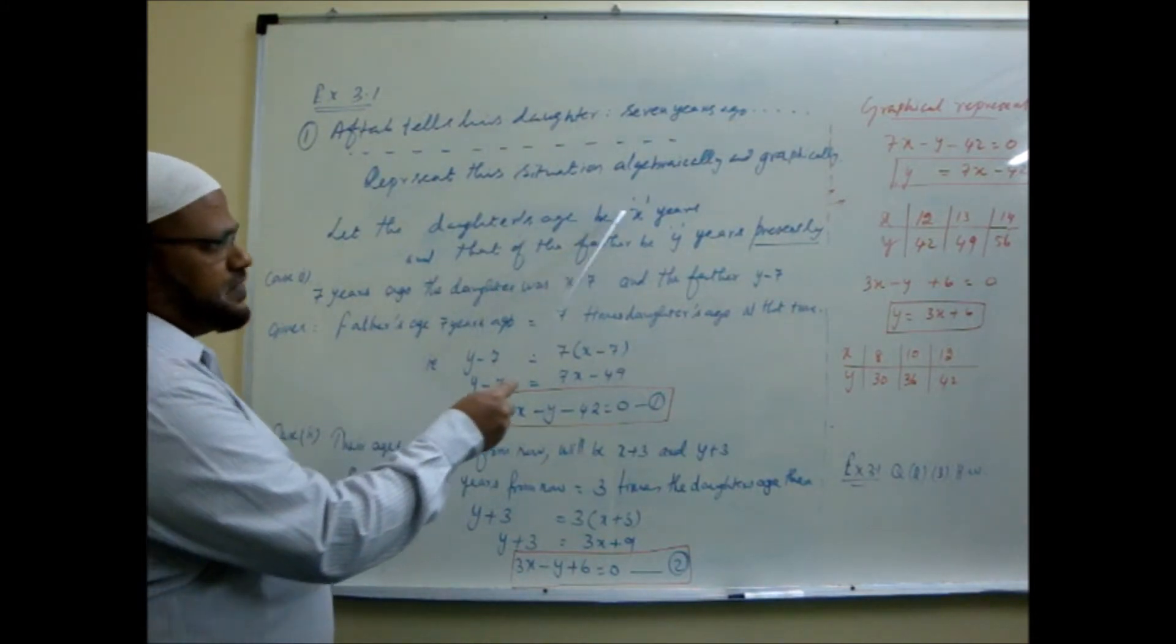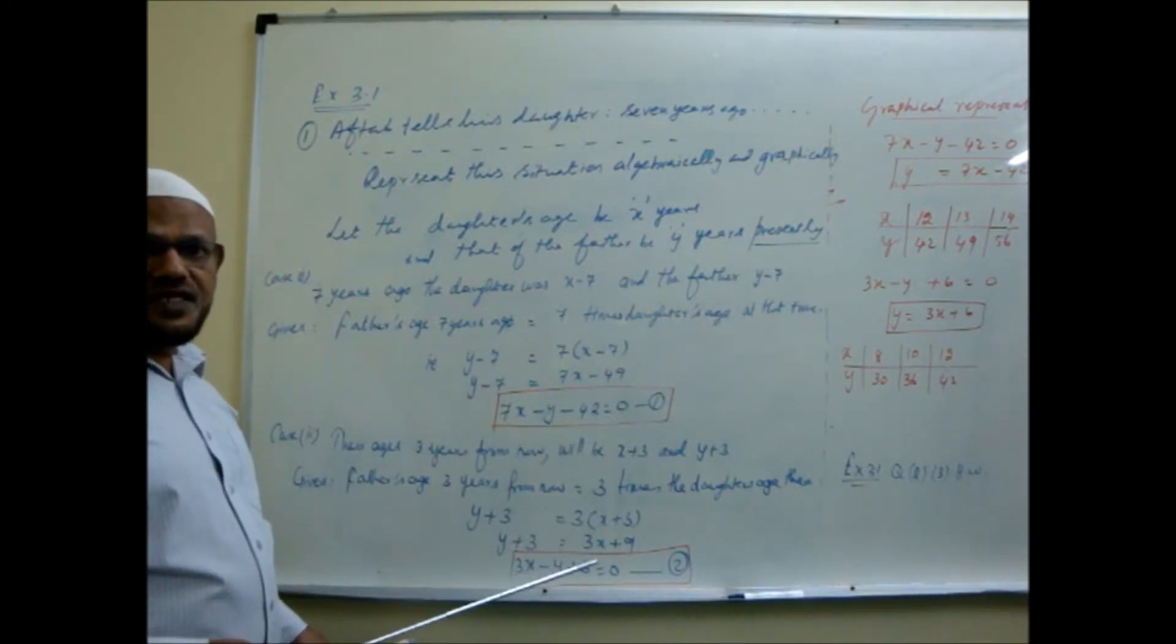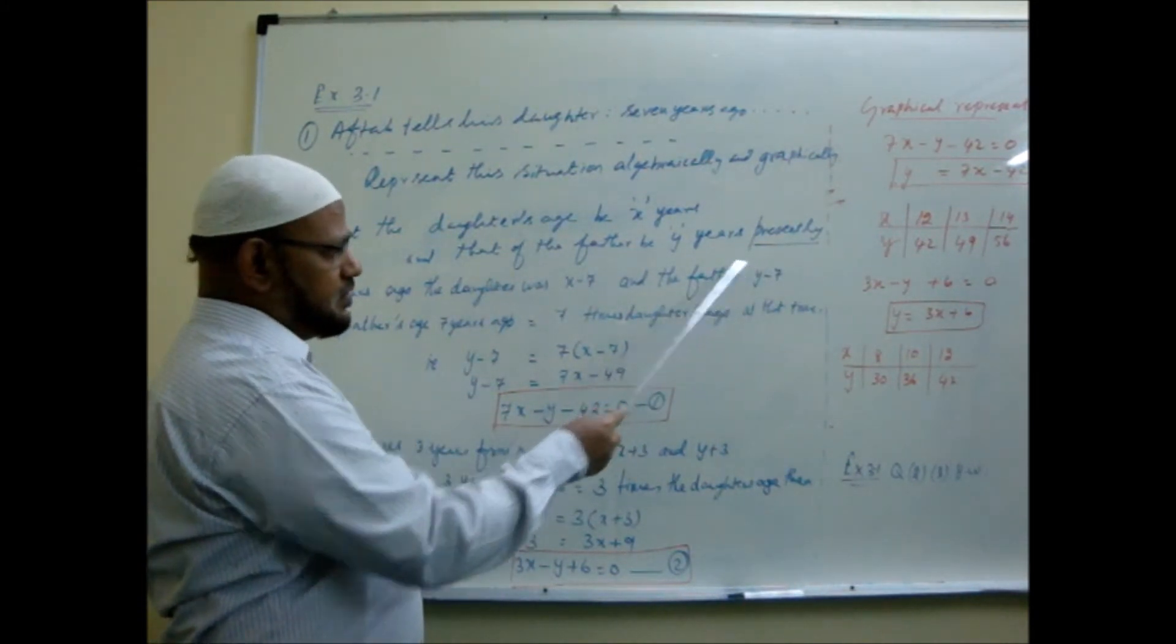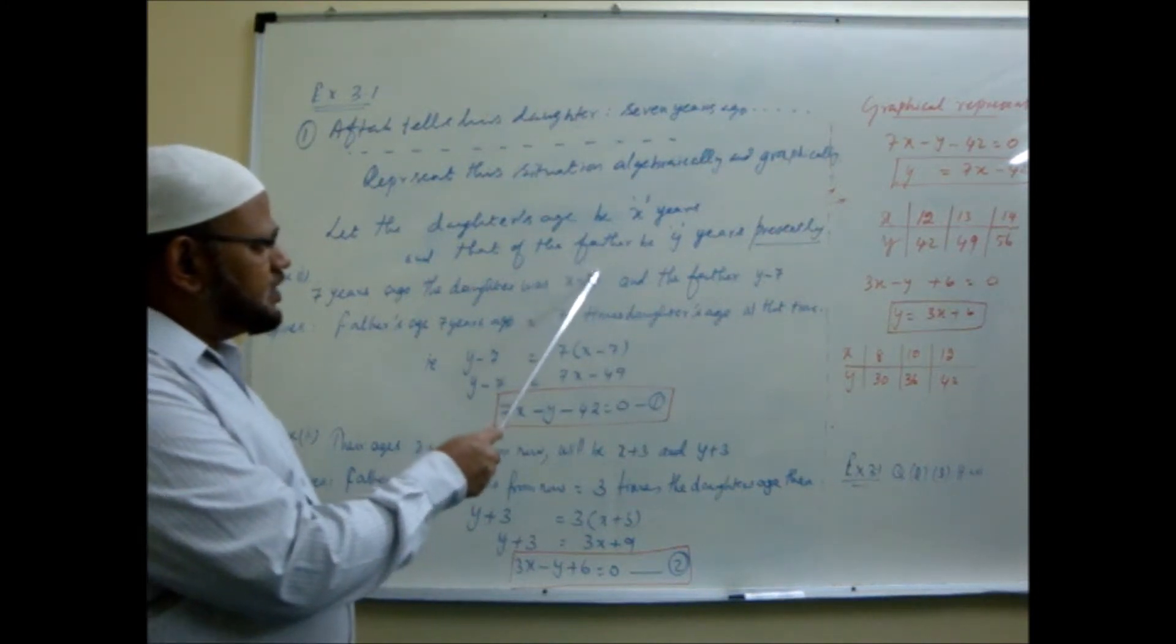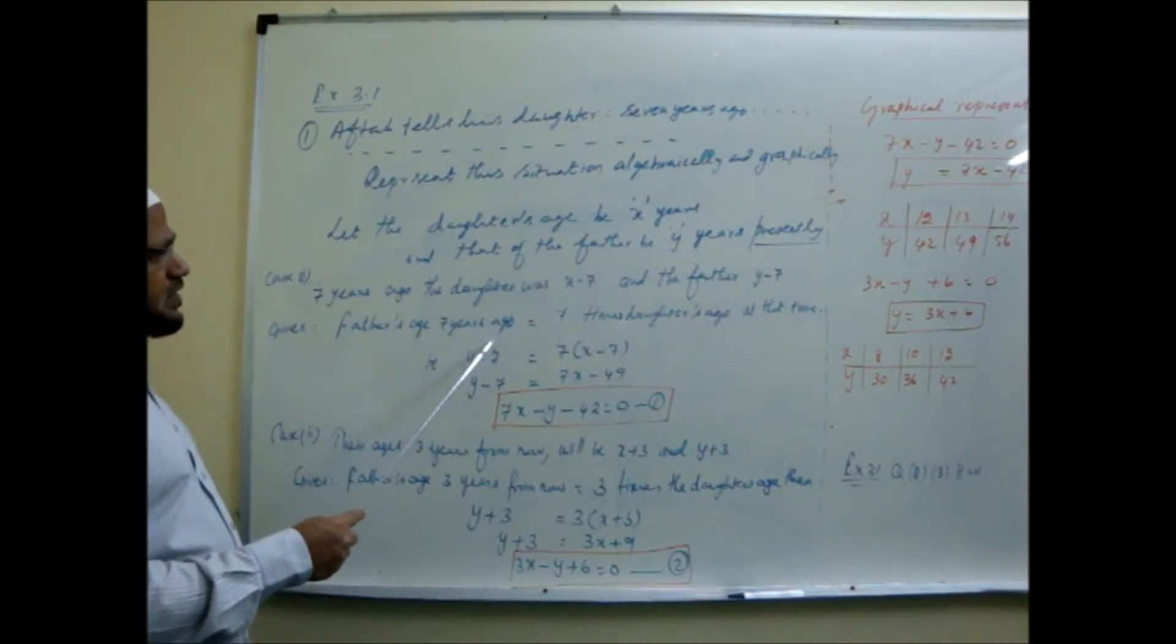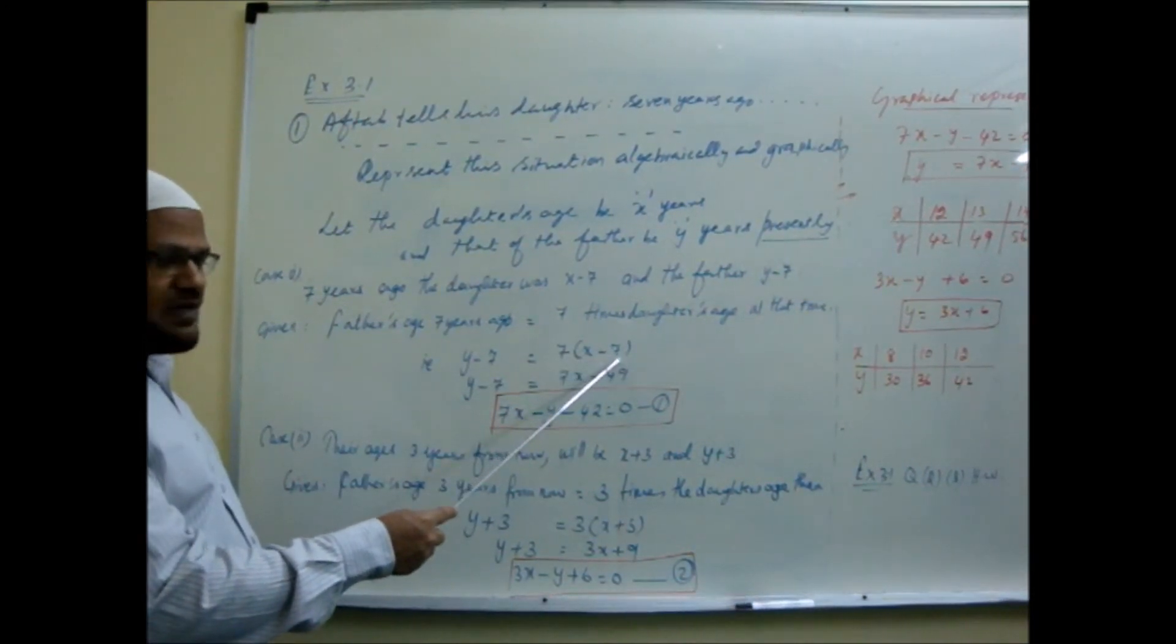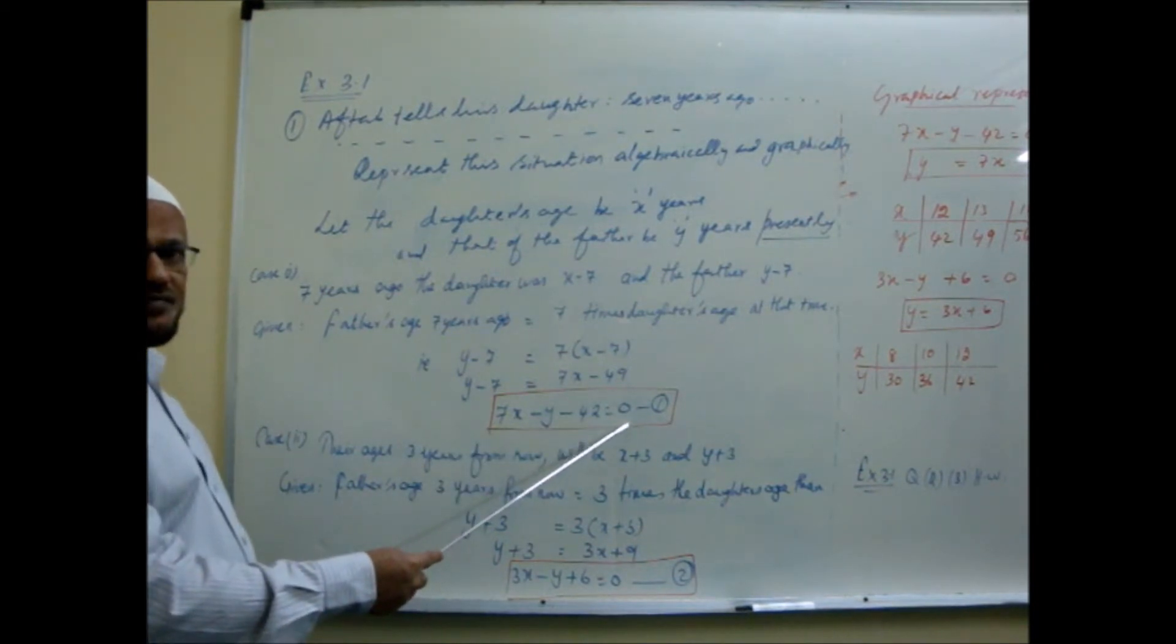You take the daughter's age as x and the father's age as y presently now. Then what will be the first case discussing about age of 7 years ago. So daughter was x minus 7, 7 years less. Father was at that time y minus 7. These two make ready. Present age is only x and y taken. So 7 years ago they were x minus 7 and y minus 7. What is given? Father's age 7 years ago was 7 times the daughter's age at that time. So how you write? y minus 7 is equal to 7 times x minus 7. Write it in the standard form. This is the first equation.